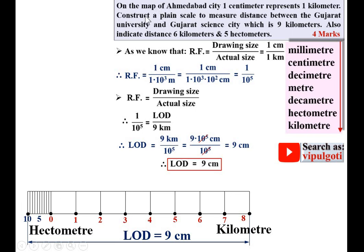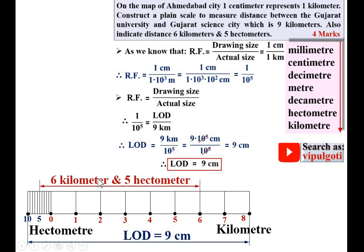We have completed the first task of constructing the plain scale. For the second part, indicate the distance of 6 kilometers and 5 hectometers. On the scale, locate 6 km on the kilometer divisions and 5 hectometers on the sub-divisions — this corresponds to 6.5 kilometers. The yellow shading shown represents the scale length, which is long enough to measure 9 km, and is for visual appearance only.